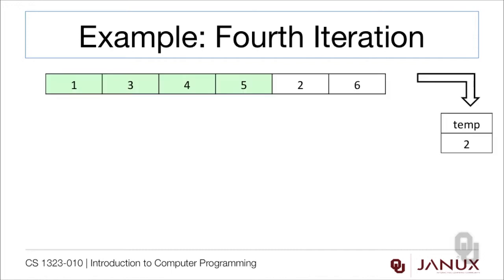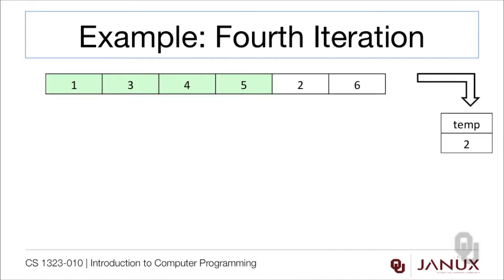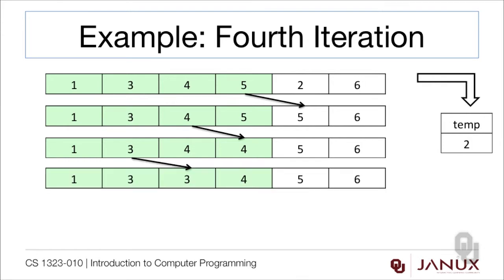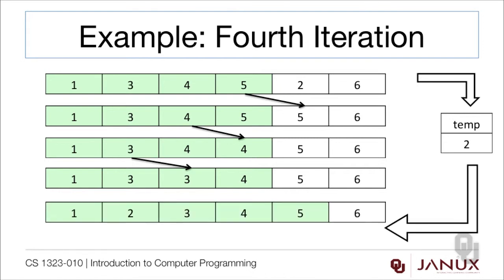Here's the fourth iteration. The 2 gets moved into the temporary position. 2 is smaller than 5, so 5 gets moved over. 2 is smaller than 4, so 4 gets moved over. 2 is smaller than 3, so 3 gets moved over. Now 2 is bigger than 1, so 1 does not get moved over. Instead, 2 gets moved into the position where 3 was.